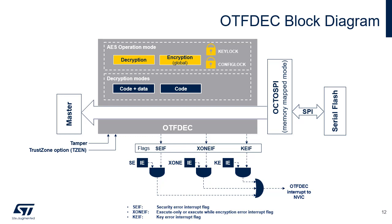OTF DEC analyzes all AHB read-transfers on the associated AHB bus. If the read request is within one of the four programmed regions, the control logic triggers a keystream computation based on AES in counter mode; this keystream is then used to decrypt the data on-the-fly in the read-transfer from the OctoSPI AHB master. Any access outside the enabled OTF DEC regions belongs to a non-encrypted region. As OTF DEC is used in conjunction with OctoSPI, it is mandatory to access the flash memory using the memory-mapped mode of the flash controller. OTF DEC can assert an interrupt to the NVIC for three causes: security error, key error, and execute-only or execute-while-encryption error. Each of these errors has a dedicated flag and an interrupt enable bit.